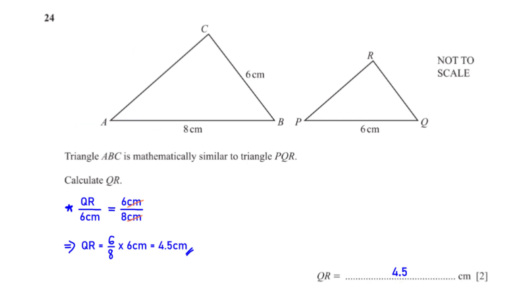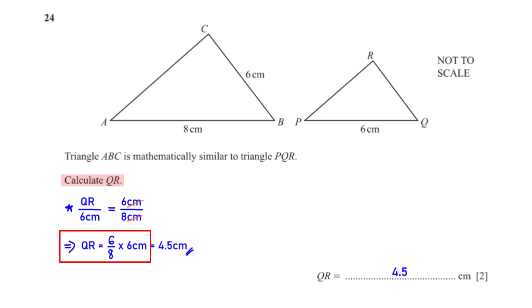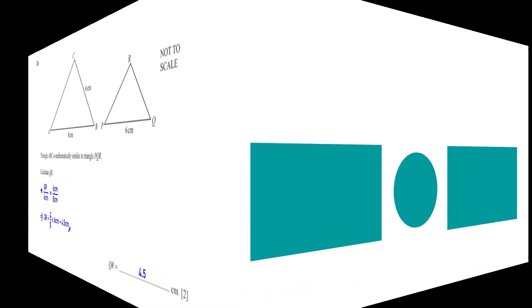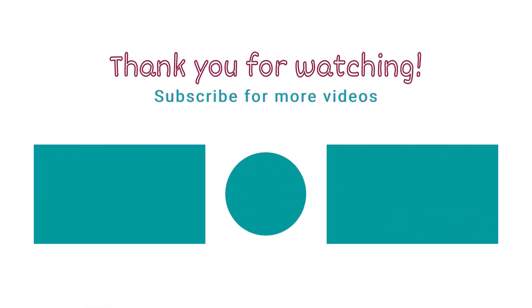Triangle ABC is mathematically similar to triangle PQR. Calculate QR. For similar shapes, the ratio of corresponding sides is equal. When we make QR the subject, we get 4.5 centimeters. Thank you for watching — I hope you found this video useful. See you in the next video!